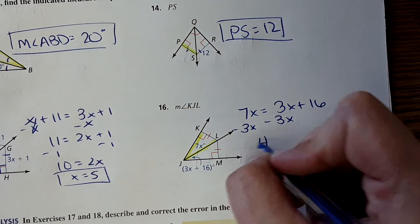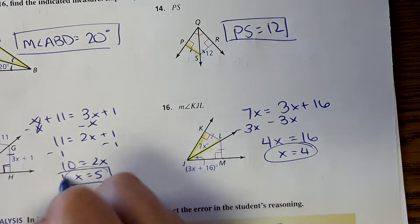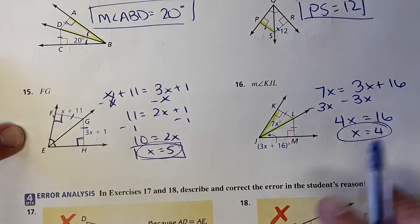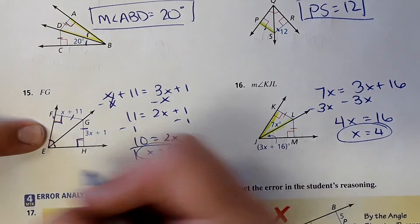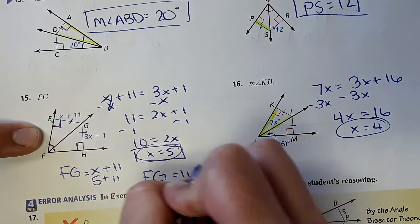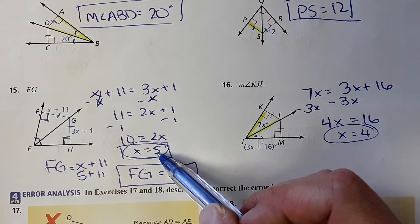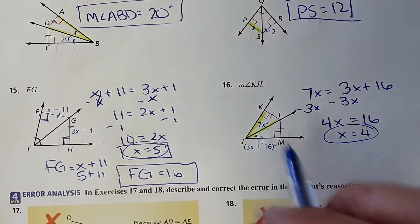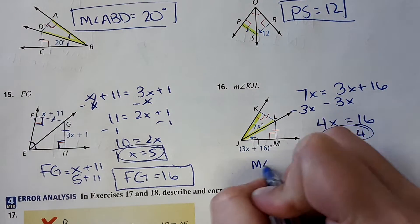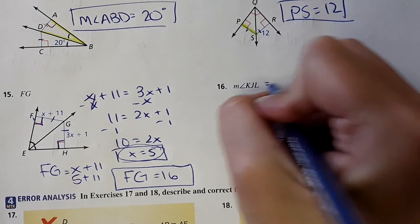Did anybody notice I forgot to finish the last one? So I get x equals 4 — but it doesn't ask for x. It asks for the actual measure. So for FG, it actually equals x plus 11, so I need to do 5 plus 11. FG equals 16 — that's a very common mistake because x equals 5 is always in the answer choices. Then for this one, the measure of angle KJL equals 7x, which is 7 times 4, so 28 degrees.